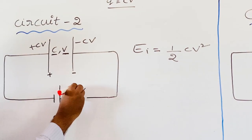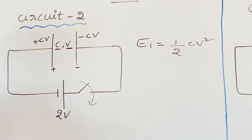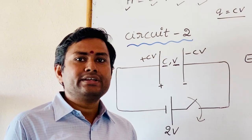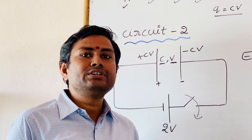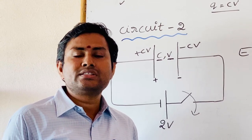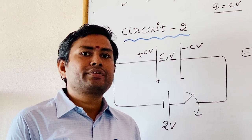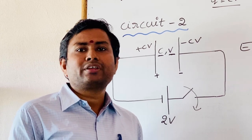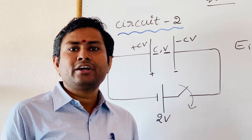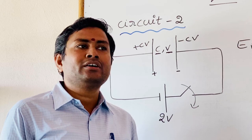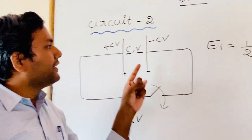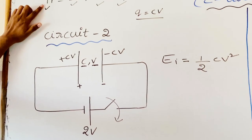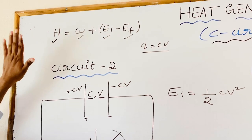Now, after closing the switch, that capacitor immediately attains steady state. Steady state indicates the state in which the capacitor is fully charged and the potential difference across the plates equals the potential difference across the terminals of the battery. Even if you don't see a resistor here, there is still the presence of resistance, and due to that resistance some heat energy H is dissipated.